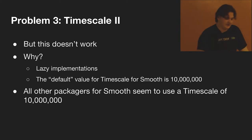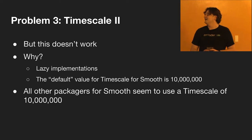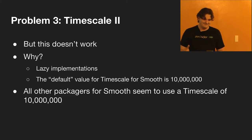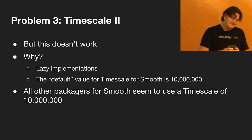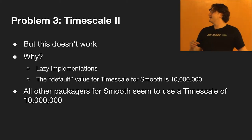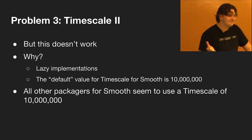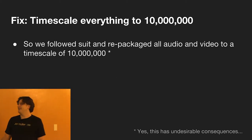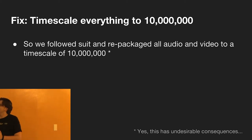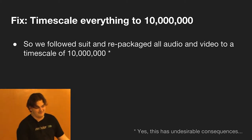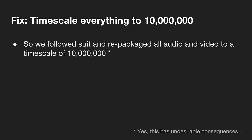We were doing DASH media encoded to whatever timescale best fit the particular frame rate. But that's not what Smooth was expecting. We were declaring the timescale correctly in the manifest - the spec allows for this - but as it turns out, it just doesn't work. The implementation is completely lazy. The default value in the spec is 10 million, and everyone has implemented it as: we'll just do the default. So it's configurable, as long as it's 10 million. We discovered every single other packager out there was using a timescale of 10 million - a dead giveaway that we should probably use 10 million too.